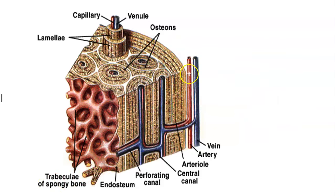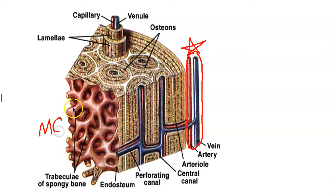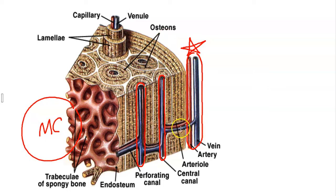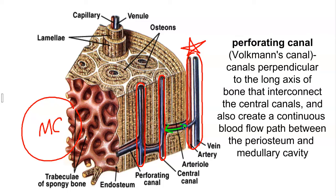Last, let's take a look at the blood supply. The periosteum — the membrane on the outer periphery of bone — is vascular. The medullary cavity contains bone marrow, so there's definitely a blood supply there. The central canal, or Haversian canal, of every single osteon contains blood vessels. The blood supply is interconnected through canals that are perpendicular to the longitudinal axis of the bone, called perforating canals or Volkmann's canals. These interconnect the blood supply within the central canals of all the osteons and create continuous blood flow between the outer periphery and the medullary cavity.